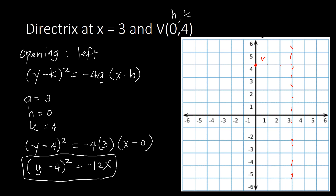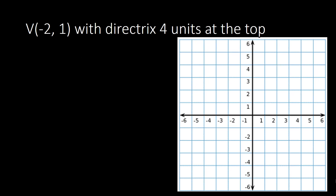Let's try the next example. The vertex is given as (−2, 1), with the directrix 4 units above the vertex. We first plot the vertex: x = −2 on the x-axis, move up 1 unit on y. Then from the vertex, we count upward 4 units — 1, 2, 3, 4 — to locate the directrix and draw that line.